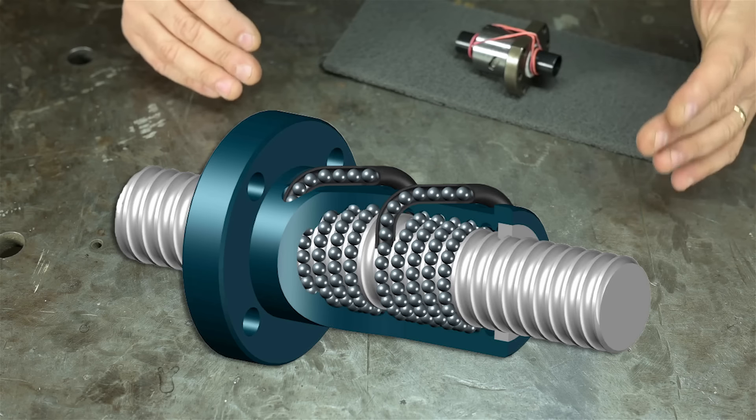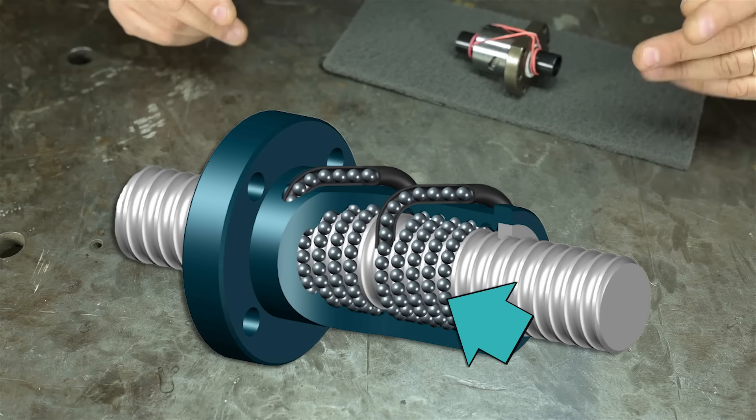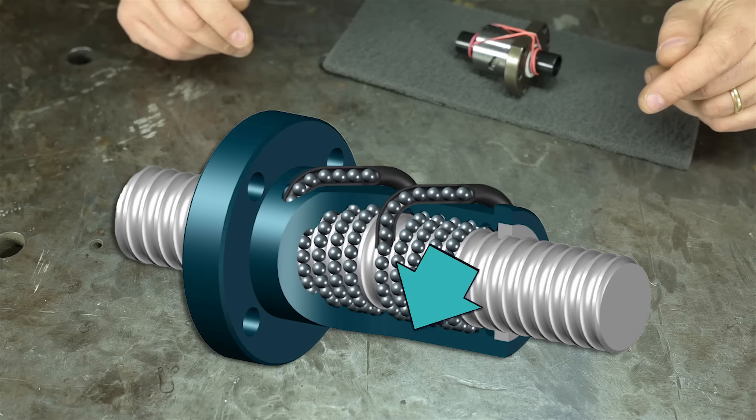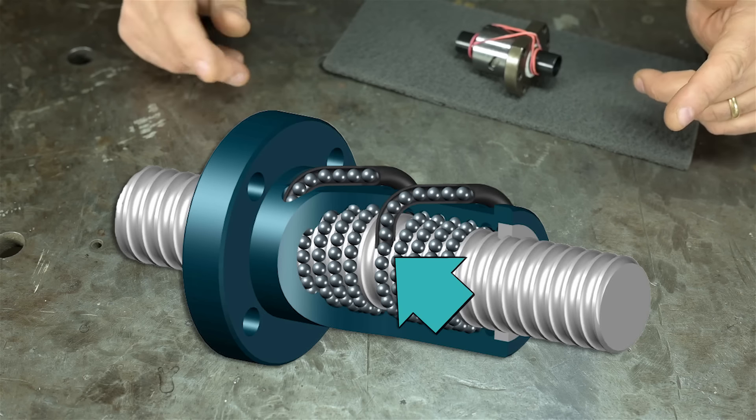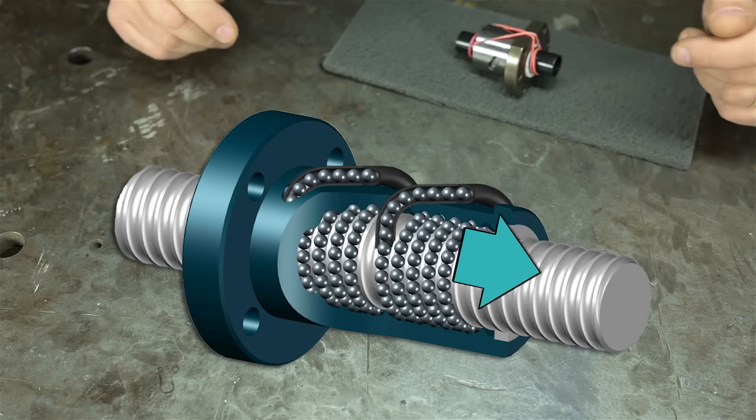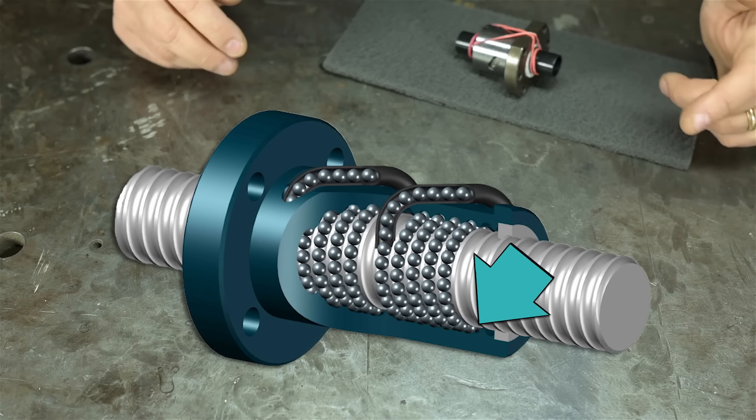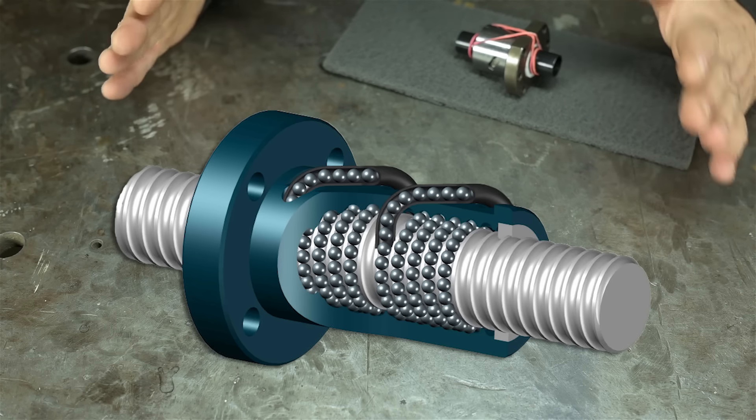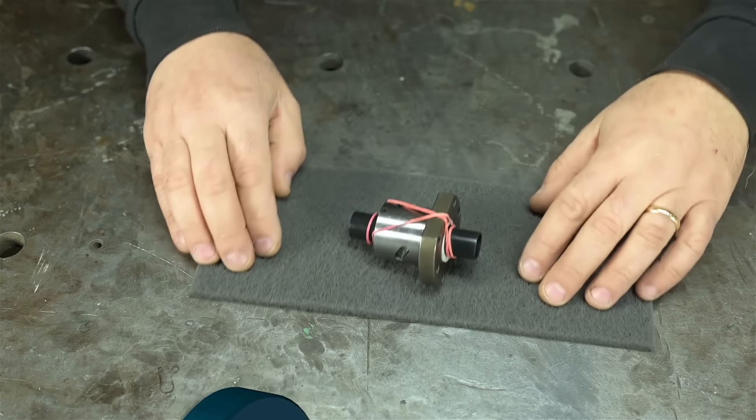When a ball nut is installed on a ball screw, the bearings are trapped inside. The balls are trapped inside. They're forced to recirculate inside of the nut. Let's take this ball here as an example. It works its way around the screw, and when it gets to the end of the nut, instead of falling out, it's diverted up and out and back to the beginning, where it's reintroduced into the screw helix. They go round and round, but are always trapped in the nut. Until...